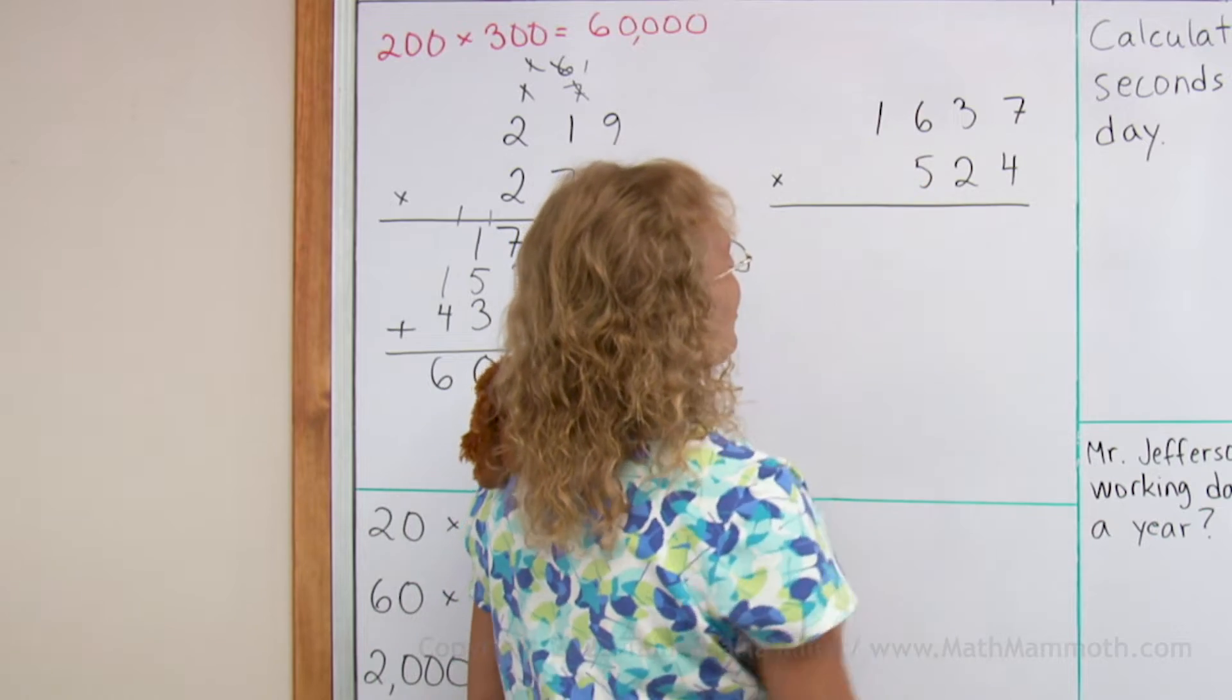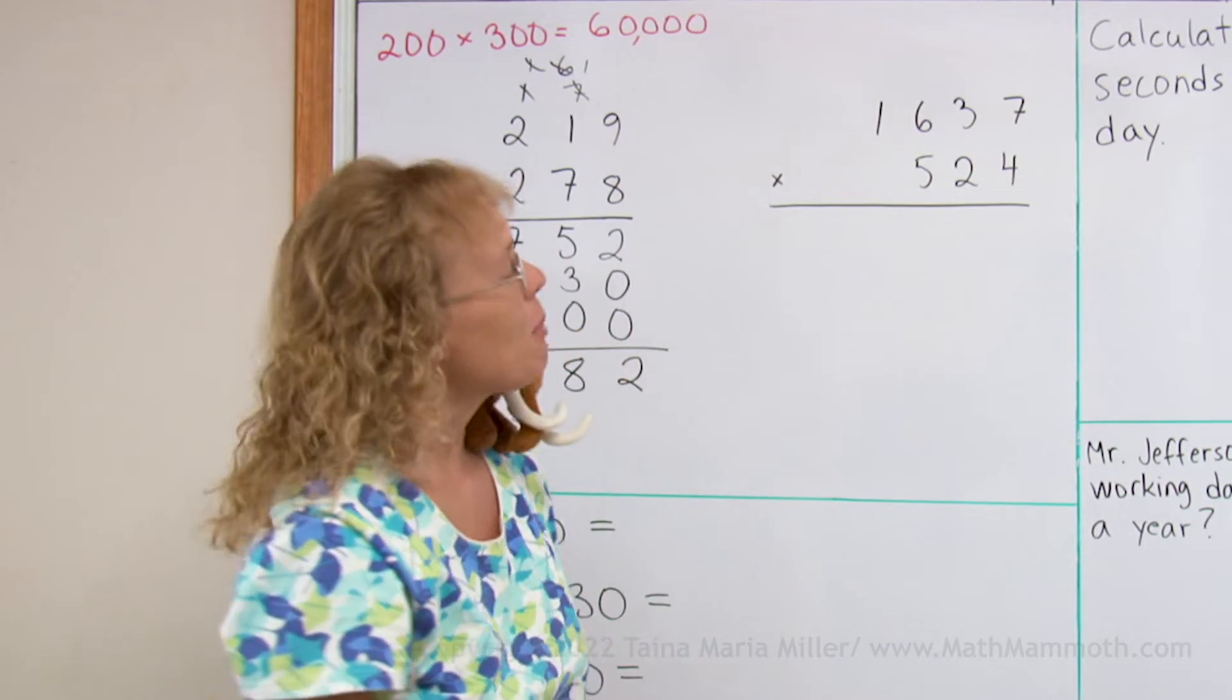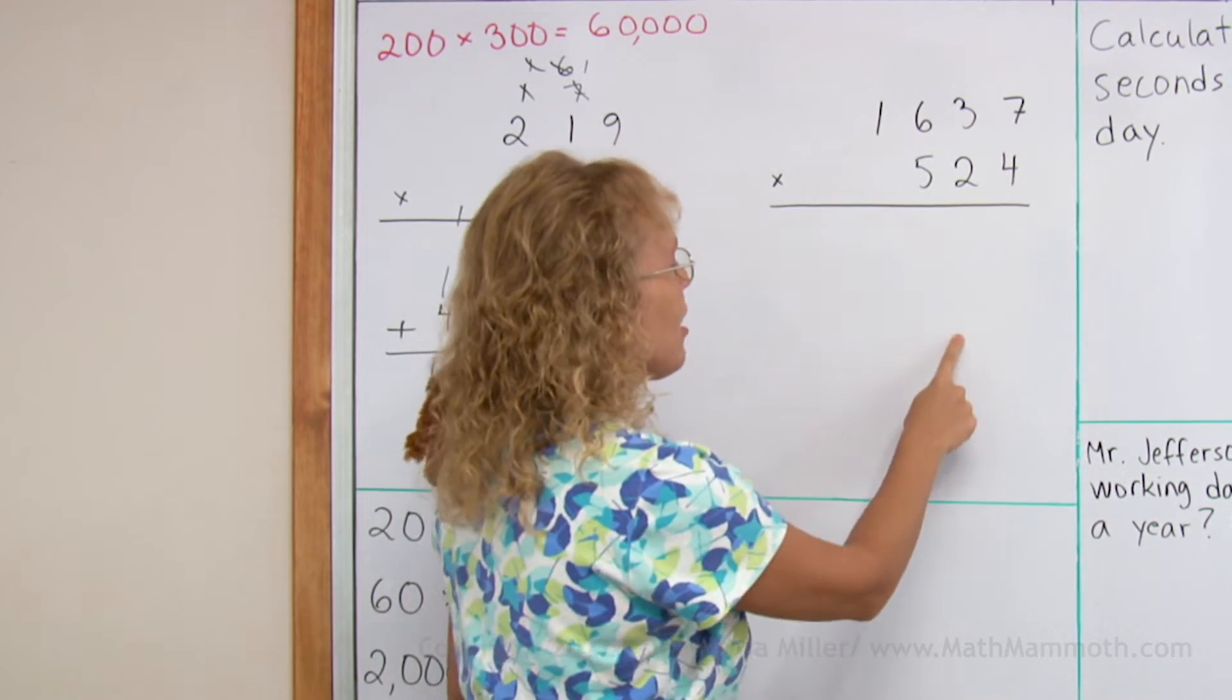Here we have four digits and three digits, okay, but the principle is the same. We're going to have three different lines here and addition.